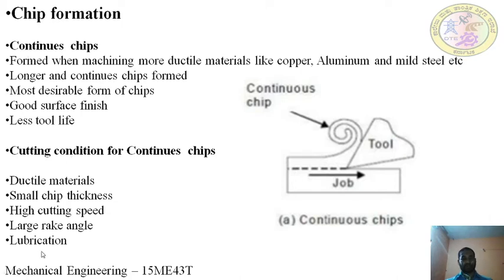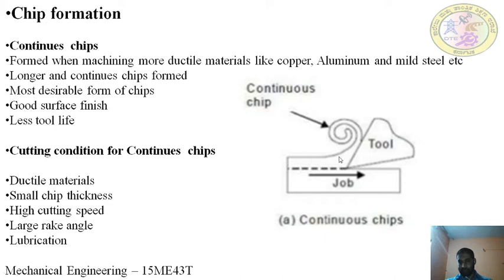Looking at the figure: the tool cuts the workpiece and a continuous chip forms — it does not break anywhere, forming in a curved shape continuously until it falls to the floor. The advantages of continuous chips are that they produce good surface finish, and the operation becomes vibrationless because the cutting forces are stable throughout machining.